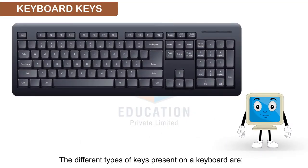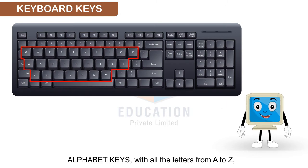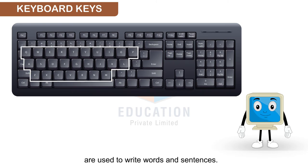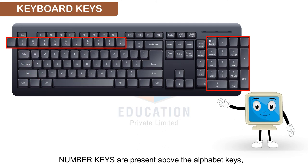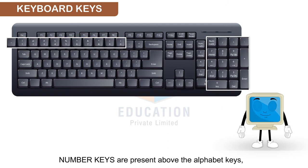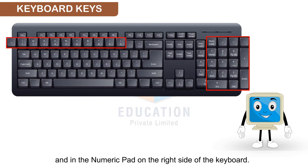The different types of keys present on a keyboard are: Alphabet keys, with all the letters from A to Z, are used to write words and sentences. Number keys are present above the alphabet keys and in the numeric pad on the right side of the keyboard.